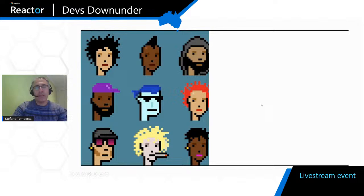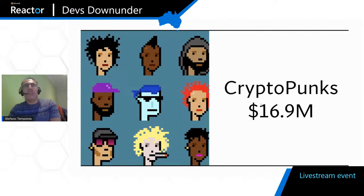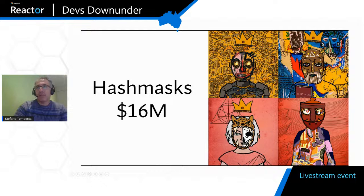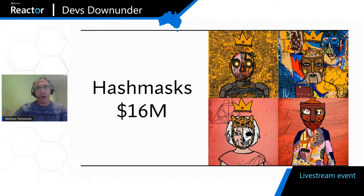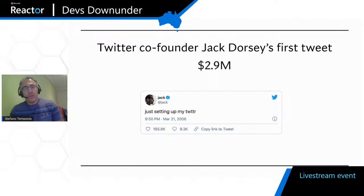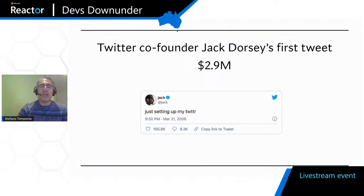How about this? These are CryptoPunks. $16.9 million is the current evaluation of the collection of these CryptoPunks, which is being sold as an NFT, as a token on Ethereum. And Hashmasks — these are actually nice. These are artists that produce masks in different flavors, different colors, very artistic, very modern — evaluation of $16 million. It doesn't have to be all about art, as in paintings and drawings and digital art in general. Jack Dorsey, one of the co-founders of Twitter, sold his first tweet for $2.9 million. What does it really mean, selling a tweet?